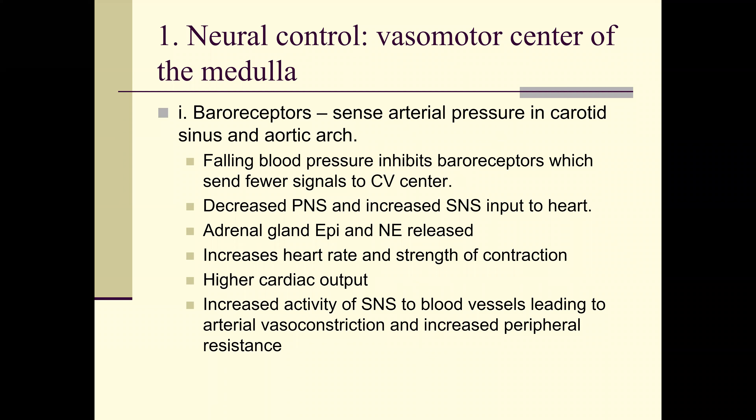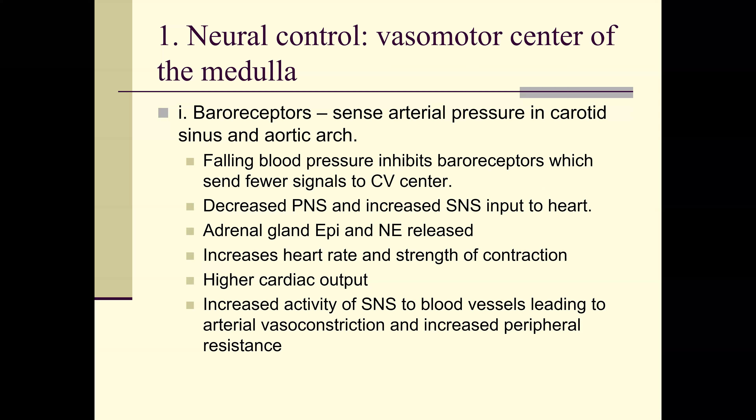If pressure is low, the opposite occurs: decreased parasympathetic, increased sympathetic. The adrenal glands release epinephrine and norepinephrine — vasoconstriction. Heart rate increases, strength of contractions increases, cardiac output increases, peripheral resistance increases. Non-essential areas like capillary beds in the GI system close down to get central blood pressure back up — the two things you must perfuse are the heart and brain. This is also why a lot of performers take beta blockers before going on stage — to keep heart rate from going to 120–140 beats per minute.